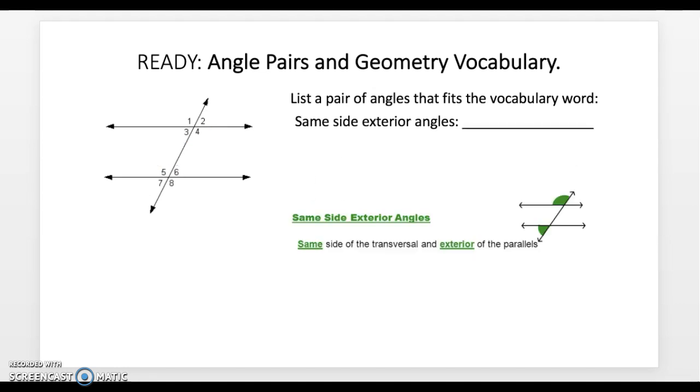Same side exterior angles are going to be on the same side of the transversal and the exterior of the parallel lines, looking at 1 and 7 and 2 and 8.